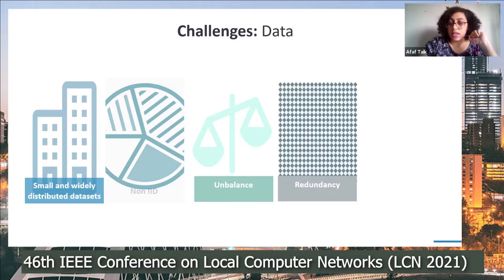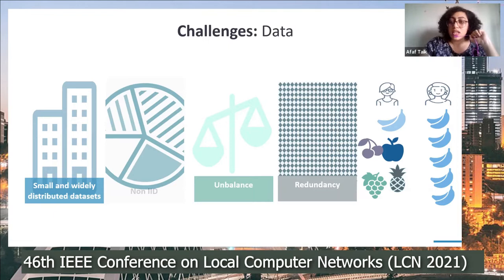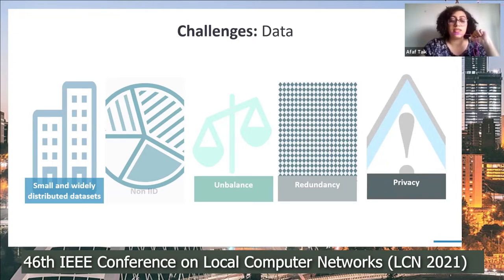Moreover, training sets are highly redundant because they are related to repetitive patterns of user behavior—some users may have highly rich data while others have very similar-looking samples. The last challenge is privacy: these samples are subject to confidentiality rules and are highly privacy-sensitive, so we cannot easily verify what these datasets look like. Our first research question is how to evaluate how informative the local datasets are for each participant without hurting their privacy.